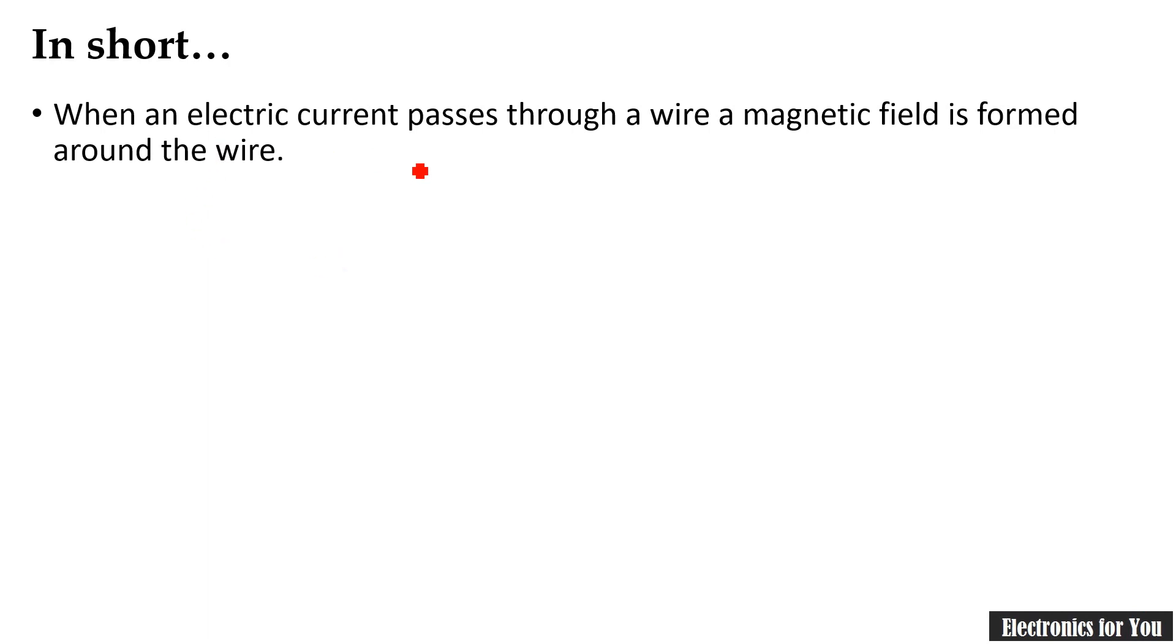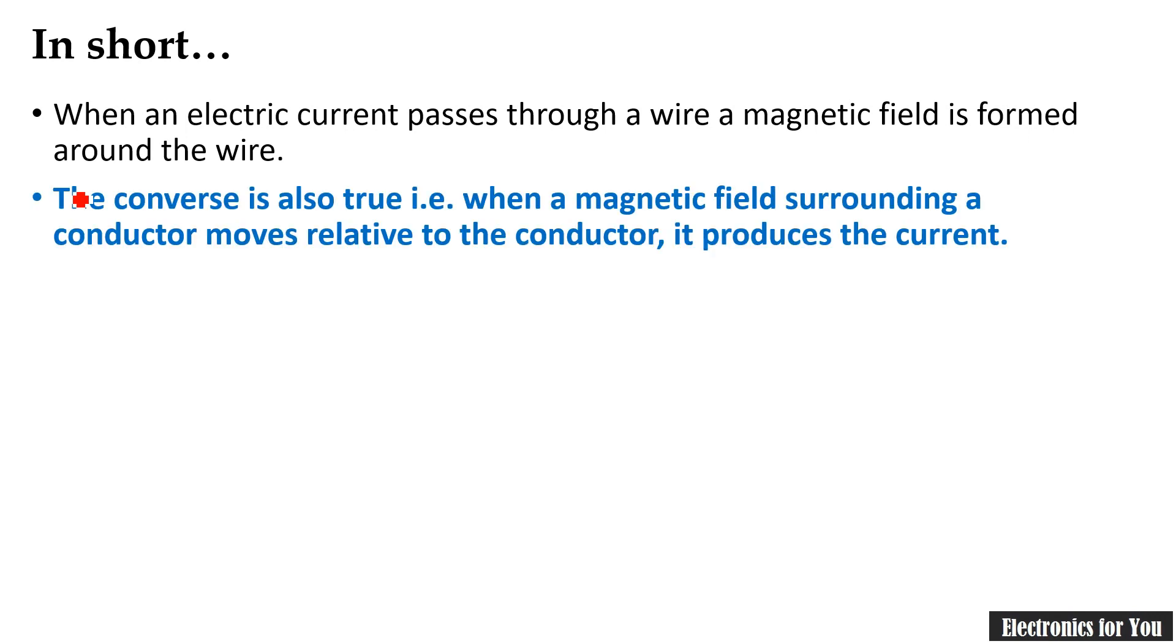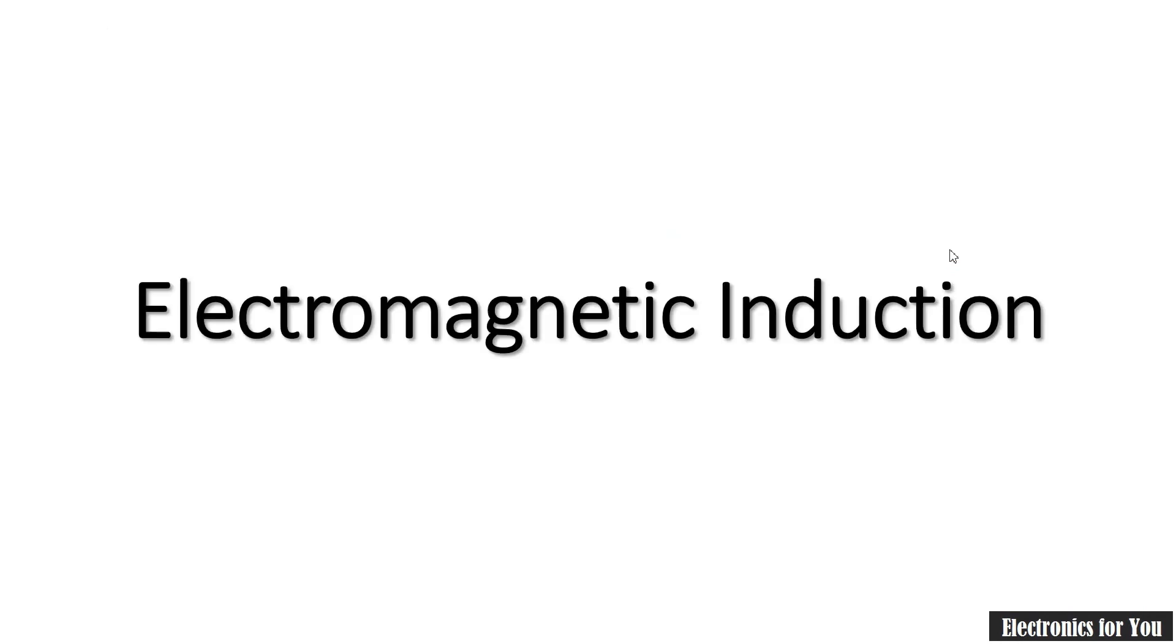So in short, when the electric current passes through the wire, magnetic field is formed around the wire. This is only half part and very important part is there, the converse is also true. That is when the magnetic field surrounding a conductor moves relative to conductor, it produces the current, that is the production of current. We will discuss about this, this concept is known as electromagnetic induction and I will discuss about it in my next video. So keep watching, thank you.